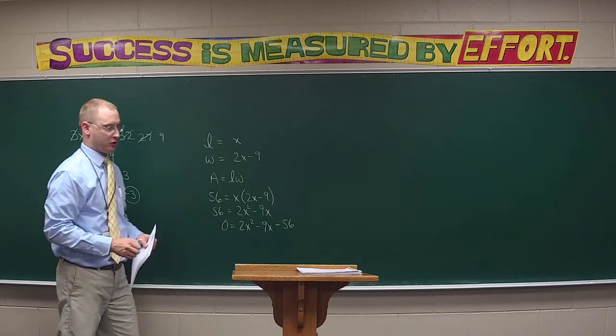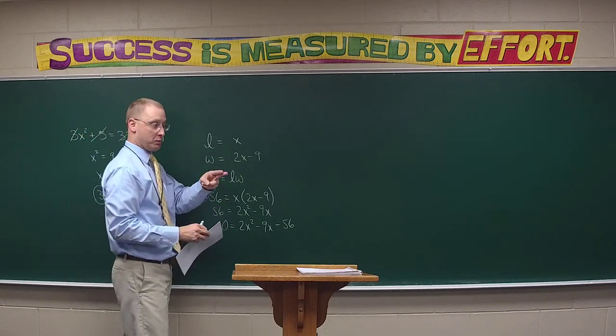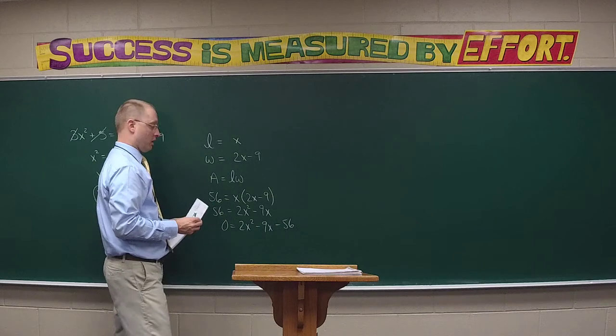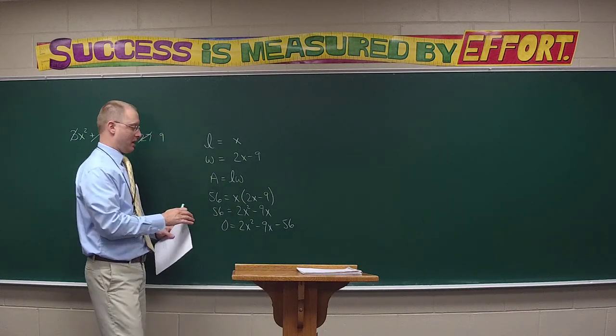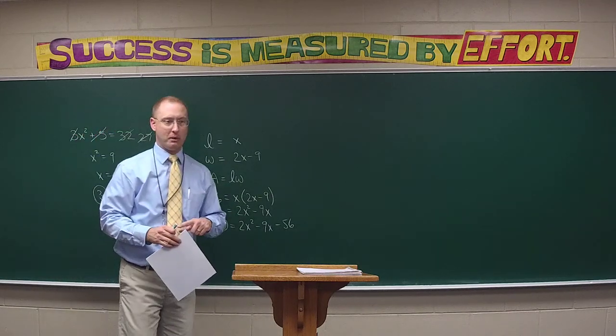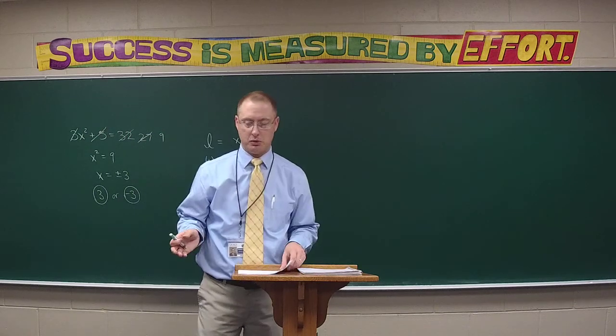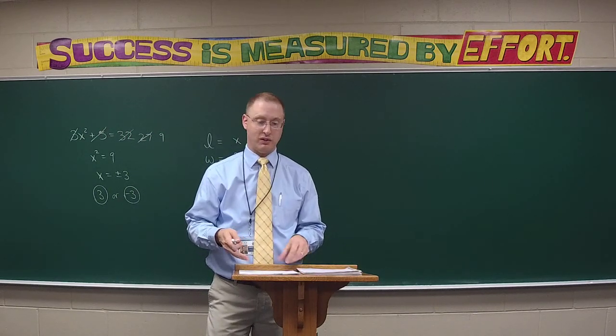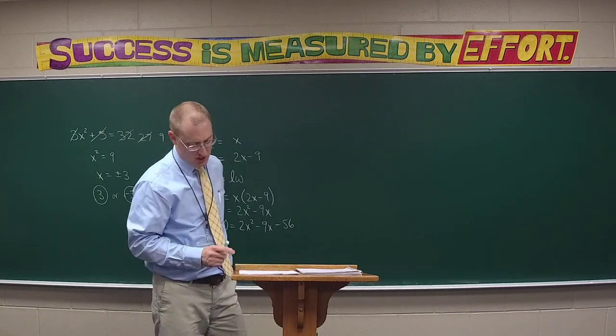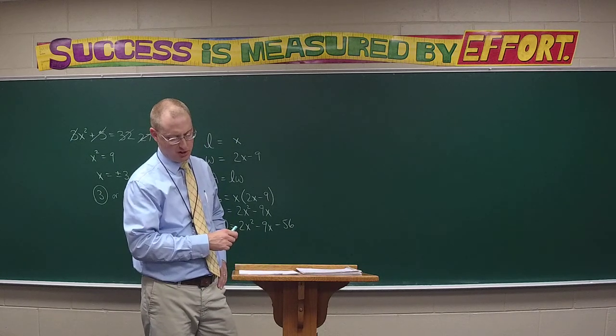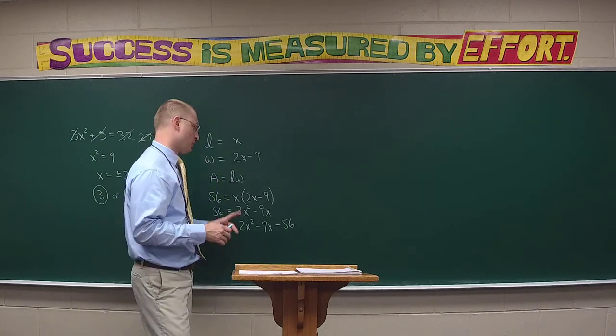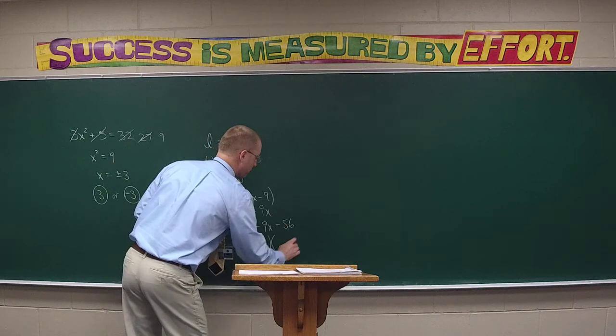It is a complete quadratic. Move everything to one side to get zero equals 2x squared minus 9x minus 56. Do we want to complete the square? No. So it's either factoring or formula. The formula bails you out when you can't factor, but this probably factors.